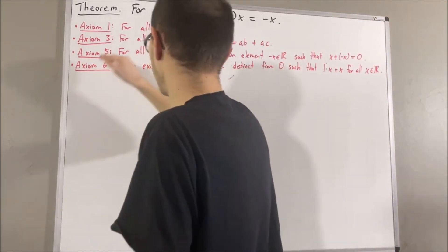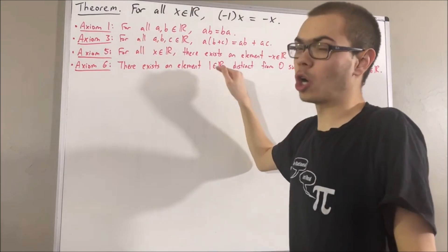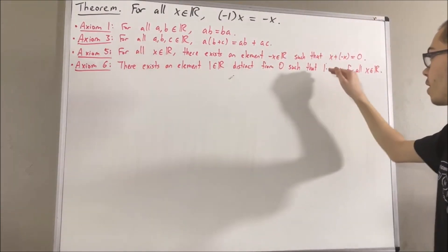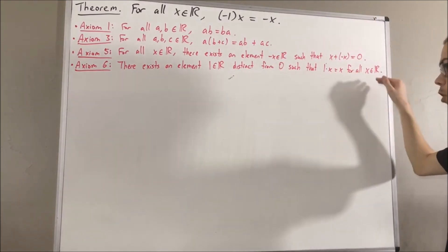And axiom 6 tells us that there exists a real number, which we call 1, that is distinct from 0, and has the property that 1 times x is equal to x, for all real numbers x.